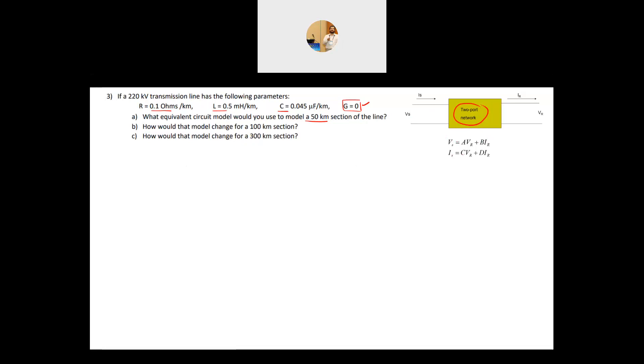And this question did not ask you for the A, B, C, D parameters. So we will just draw the circuit and find the parameters. So for a line like this, we will use the short line. The short line, any line less than 80 kilometer considered as a short line. This is a 50 kilometer, and the model for the short line as such. It's only a resistance in series with an inductance. So your R is basically is equal to 0.1 ohms per kilometer times the 50 kilometer, and this will give me 5 ohm.